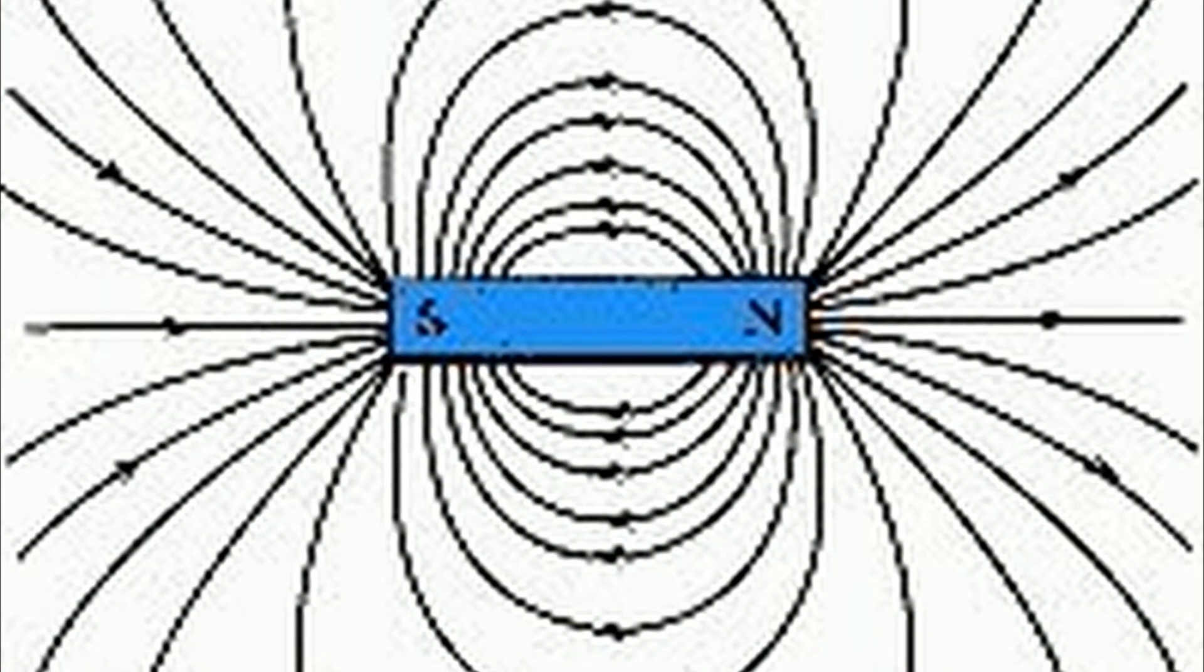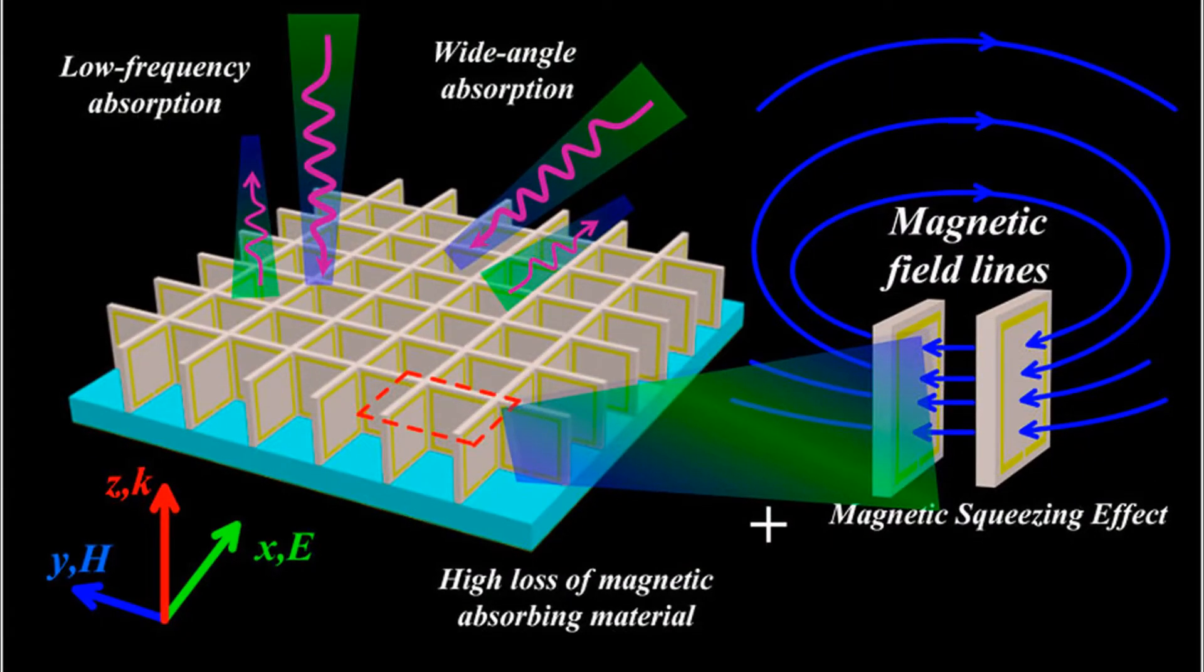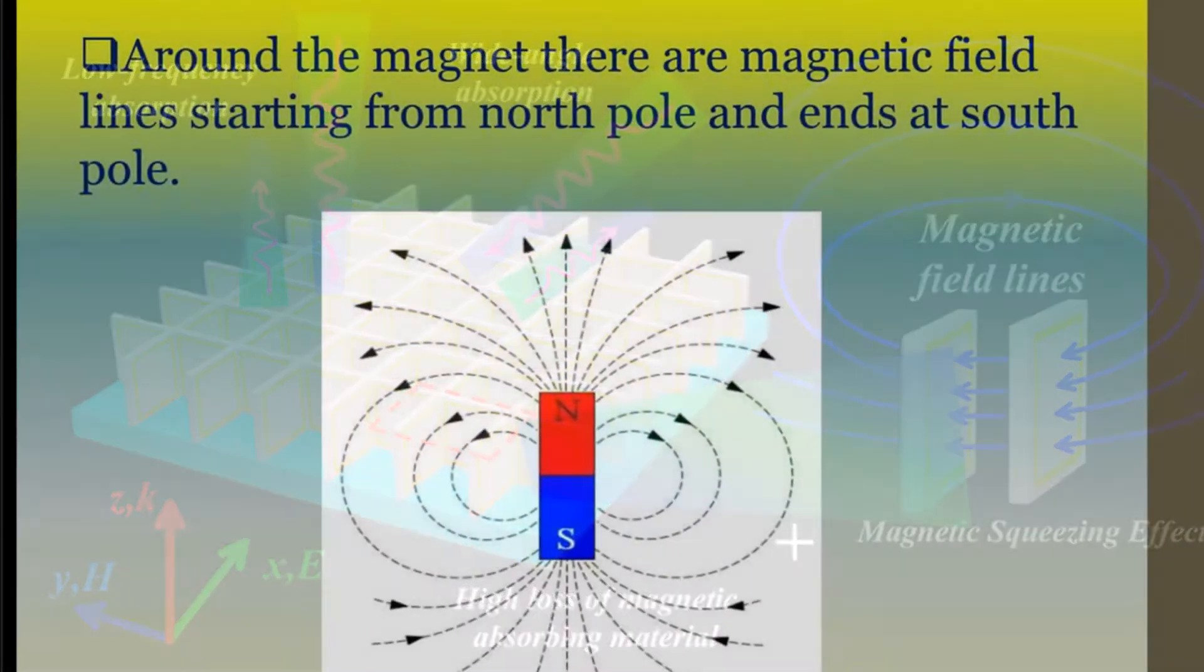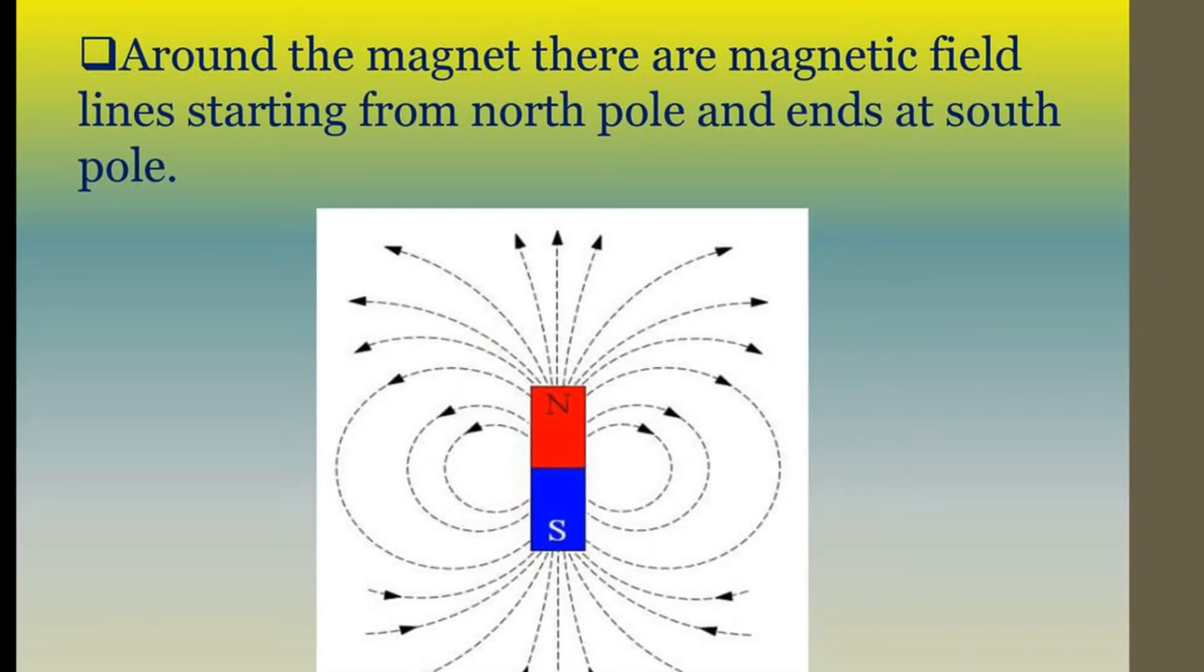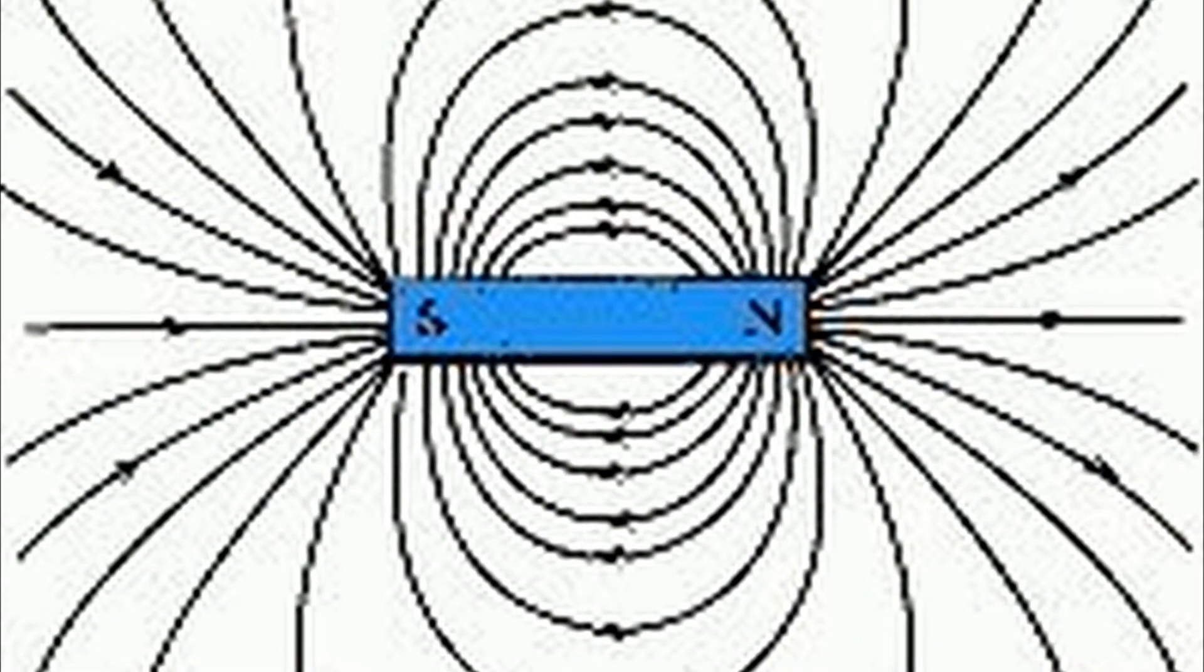Here are some points to note. The lines are crowded near the poles where the field is the strongest. The lines are far apart where the field is weak. The lines start from the north pole and end at the south pole. The lines do not intersect i.e cross one another.